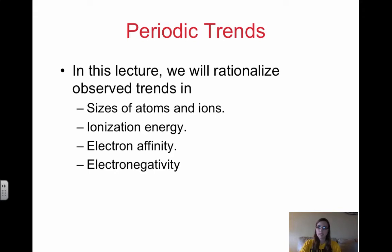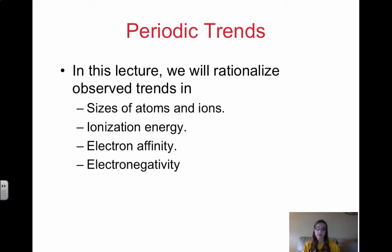The biggest thing is we are going to have to justify these trends. Justifying all of these periodic trends usually can be simplified using one of two generalizations. We can use effective nuclear charge to justify trends across a period, and then we can use increased distance — our value of n — and shielding to justify trends going down a group.